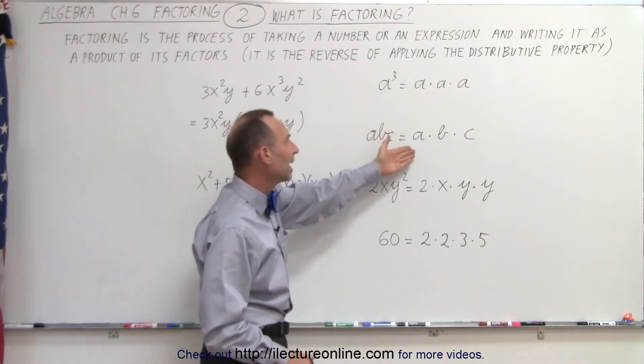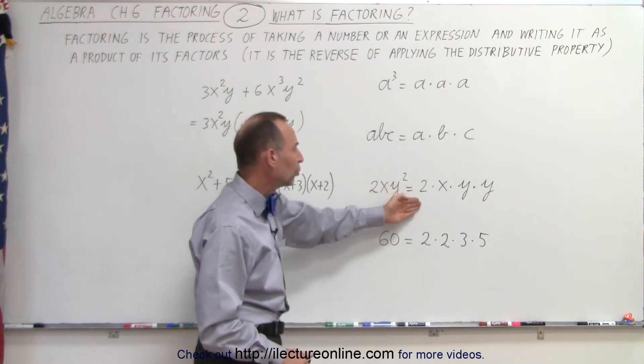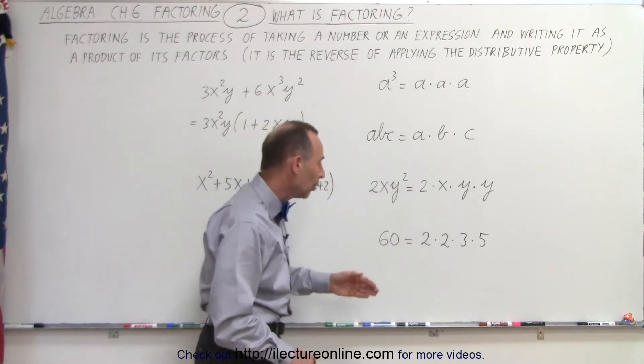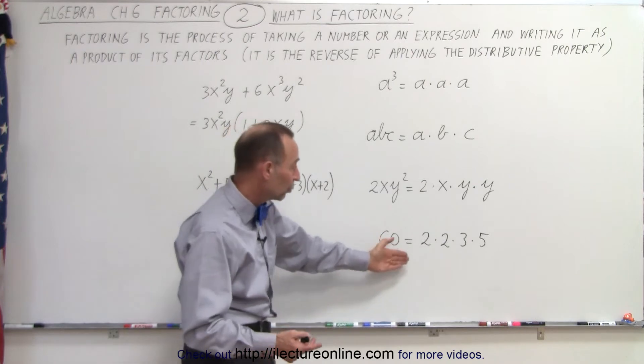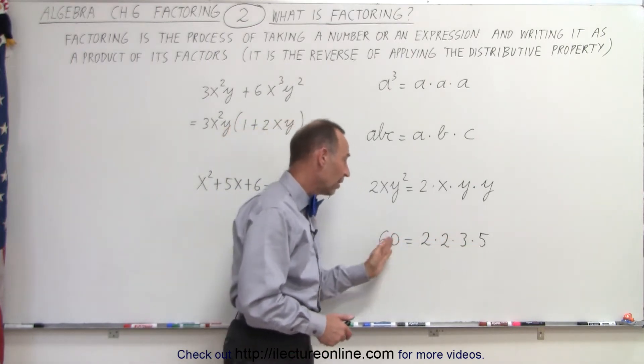Or abc can be written as a times b times c. Or 2xy squared can be written as 2 times x times y times y. Or 60 can be written as 2 times 2 times 3 times 5. So these are the factors of 60.